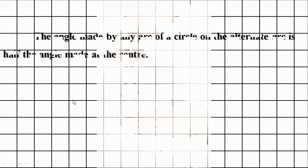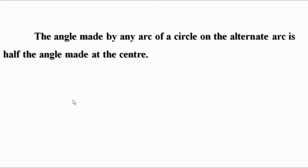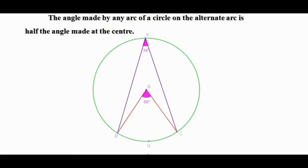First of all, let us use the idea that the angle made by any arc of a circle on the alternate arc is half the angle made at the center. Here, BQC is an arc, BOC is the central angle of that arc, and BPC is the angle made by the arc on its alternate arc. Therefore, the angle at P is half the angle at the center.